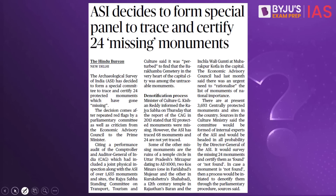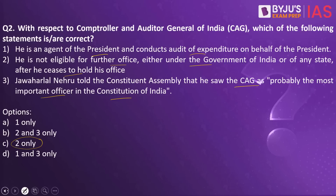This practice question references an article in The Hindu about the Comptroller and Auditor General of India. The first statement is wrong because the CAG is not an agent of the president — he is the agent of Parliament, and all audits of expenditure are done on behalf of Parliament, not the president.